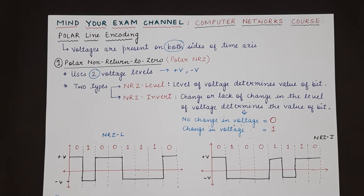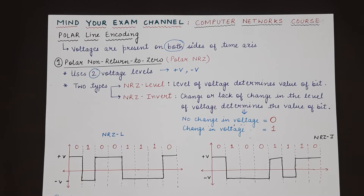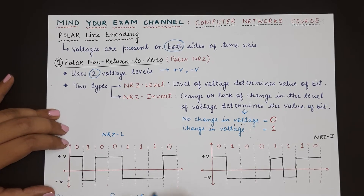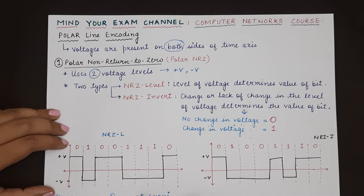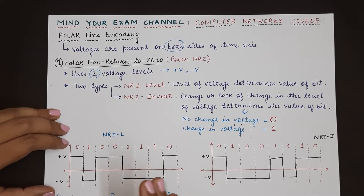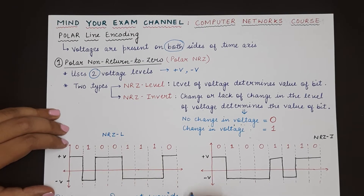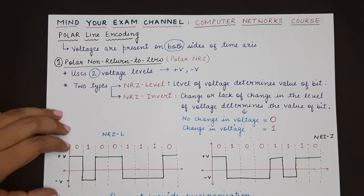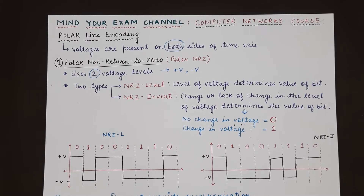The disadvantage of the polar NRZ scheme is that it does not provide any kind of synchronization. If the clocks of the sender and receiver are not synced and not running together, there might be confusion in what data is being sent and what has been received — the receiver might interpret the data incorrectly.